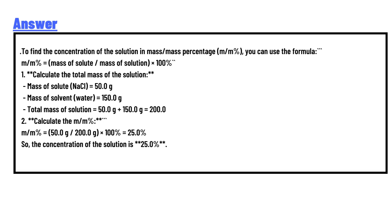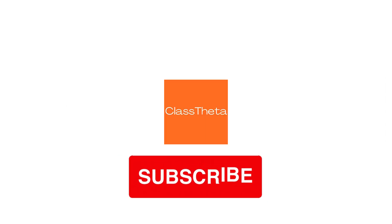m/m% = (50.0 / 200.0) × 100% = 25.0%. This is the correct answer to the question. If you have any questions, please leave your comment and I will be answering you as soon as I can.